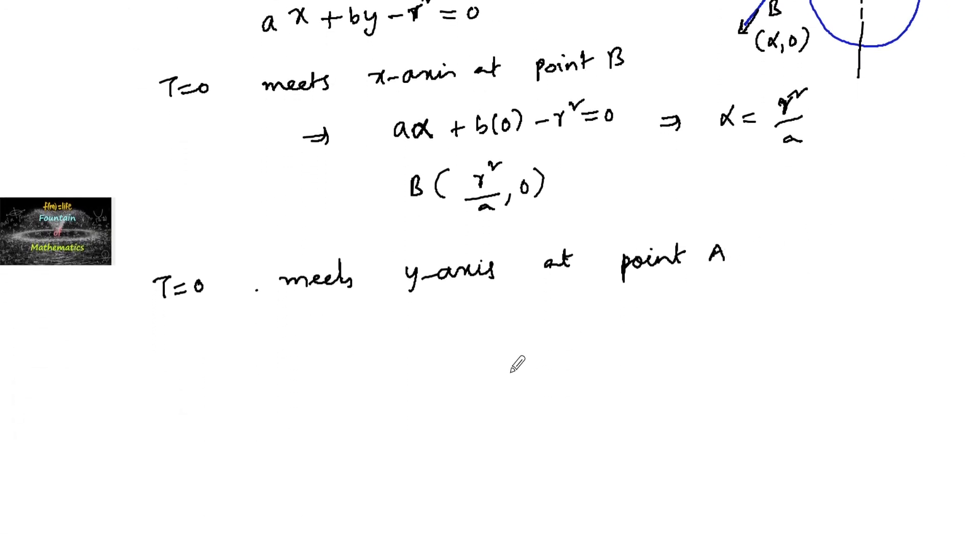Which implies a·0 + b·β - r² = 0, which implies that β = r²/b. So point A can be taken as (0, r²/a).